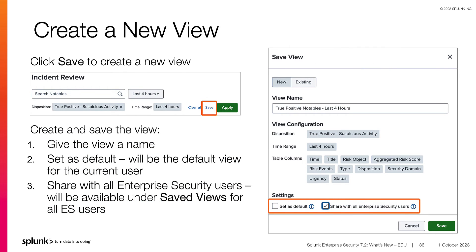Prior to version 7.2, or on 7.2 without the enhanced Incident Review workflows enabled, you use the Save New Filters link to create a saved view of the filtered dashboard. You give the filter a name and optionally set it as the default view. These views are just for the current user. Once the views are created, you can use the Saved Filters dropdown to change the view or manage the saved filters. When managing the filters, you can only change the default view or delete a view. With the enhanced Incident Review workflows available in ES 7.2, not only do you get the advanced dashboard filtering, but you also get the ability to create new dashboard views and share them with other users. Once you have filtered and arranged the dashboard, select Save.